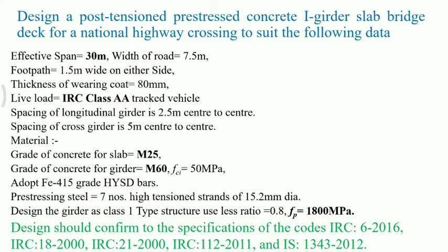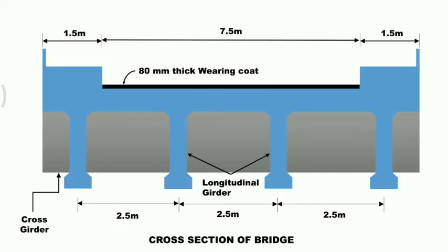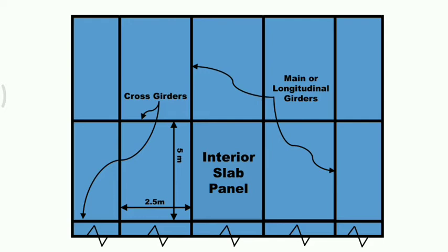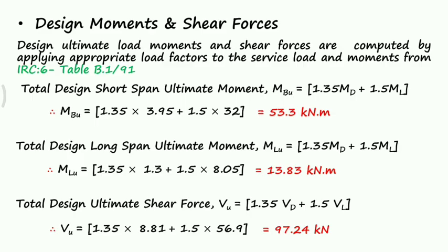This is the numerical which we already discussed in lecture 1. This is the cross section of the bridge and the top view of the bridge. In lecture 1, we already obtained the design moments and shear forces for two-way deck slab bridge. In the shorter span, we obtained the moment as 53.3 kNm and in the longer span, the moment as 13.83 kNm. The design ultimate shear force is 97.24 kN.